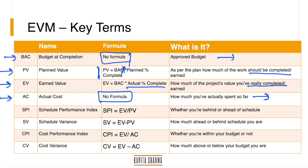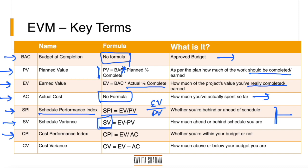Now, how do we find out how the project is doing? SPI (Schedule Performance Index) tells whether the project is behind or ahead of schedule; formula: SPI = EV ÷ PV. Schedule Variance (SV) = EV − PV. CPI (Cost Performance Index) tells how the project is doing with respect to cost; formula: CPI = EV ÷ AC.